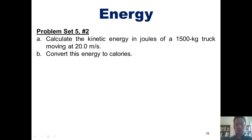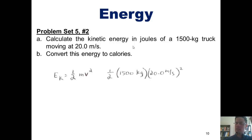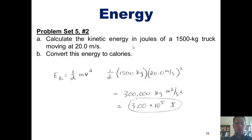Let's begin by looking at Part A — how would I convert the mass of this truck and its velocity into kinetic energy? I have to remember that kinetic energy equals one half mass times velocity squared. So my kinetic energy equals one half times 1500 kilograms, multiplied by 20 m/s squared. That gives a final answer of 300,000 kg·m²/s², which is the same as 3 × 10⁵ joules.